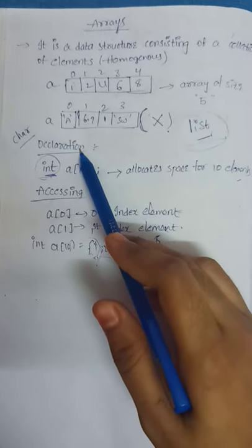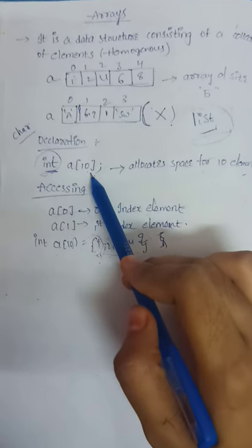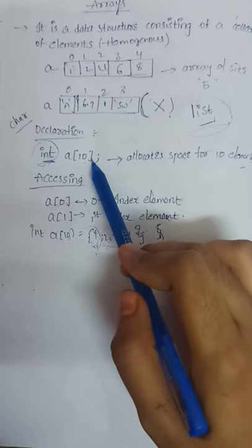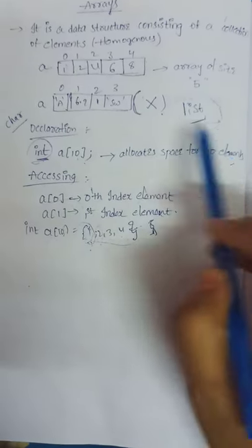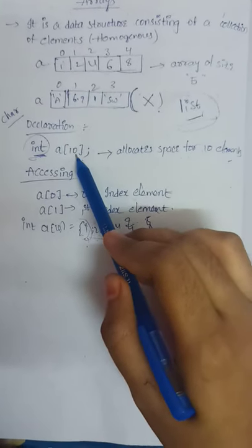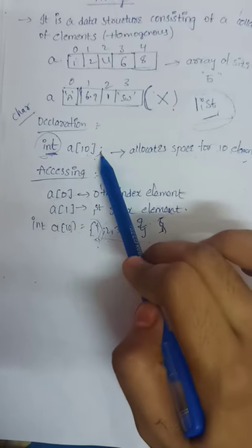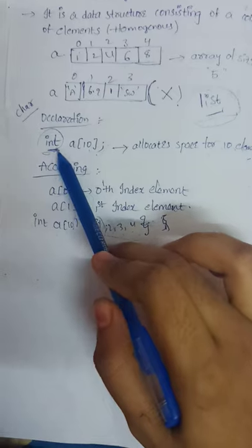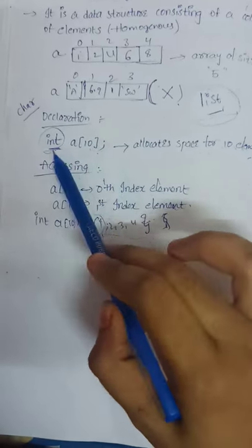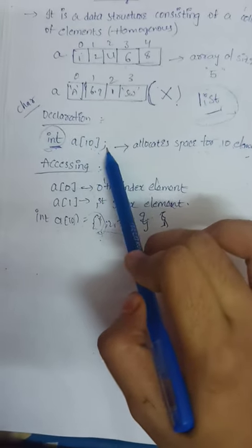Declaration of an array: how can we declare an array? Int a[10] - this is the statement to declare an array. This statement allocates space for 10 elements because we are giving size as 10. Here the data type is int, so it is an integer array. If you specify char here, it would be a character array. We can store only character elements in a character array and only integer type elements in an integer array.